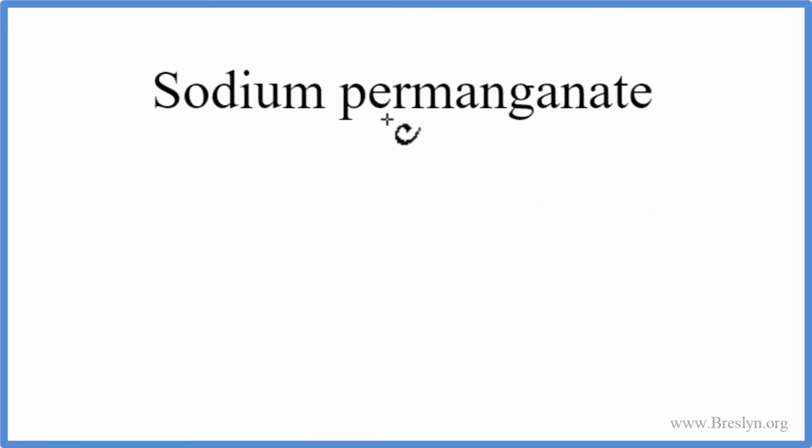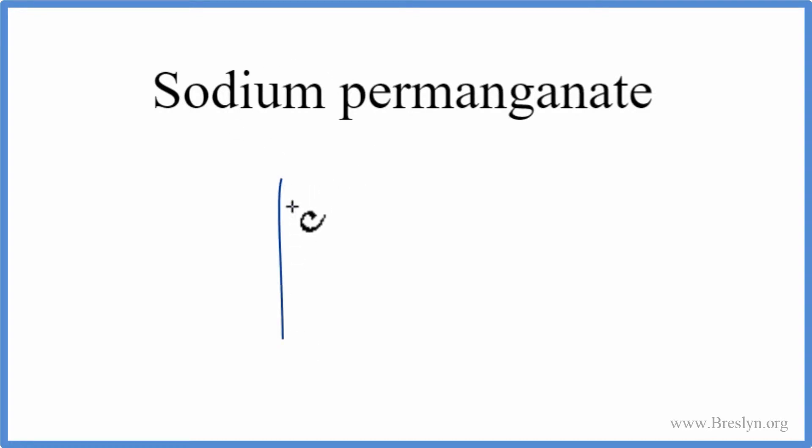To write the formula for sodium permanganate, we go to the periodic table, we look up sodium, and the element symbol for sodium is Na.